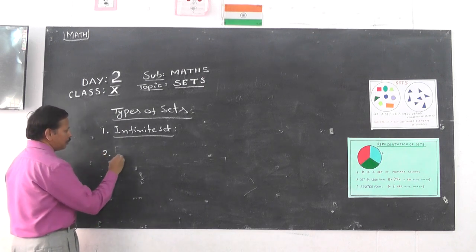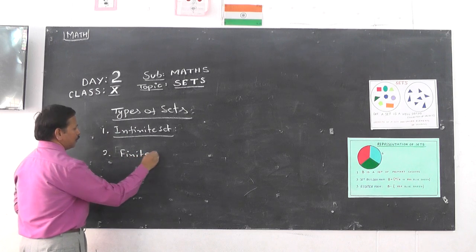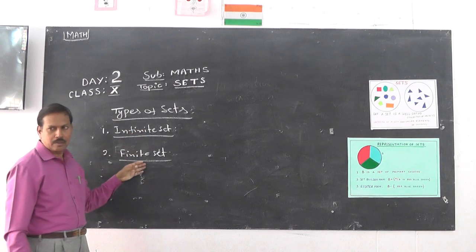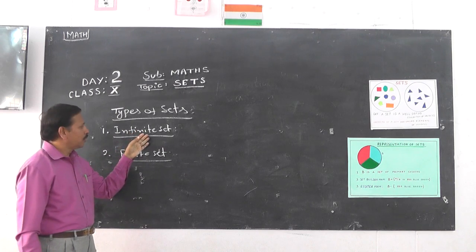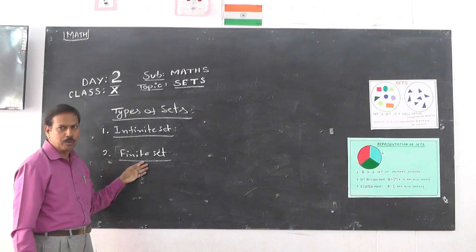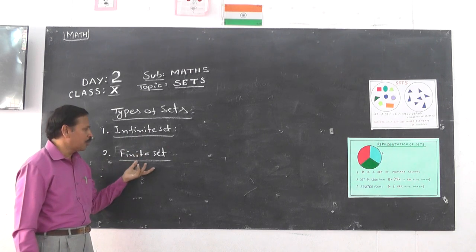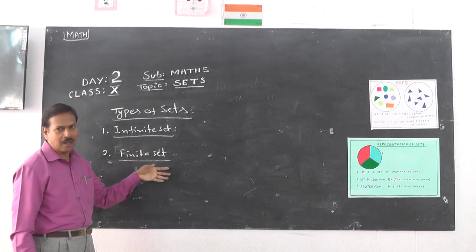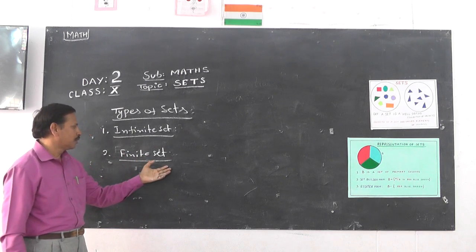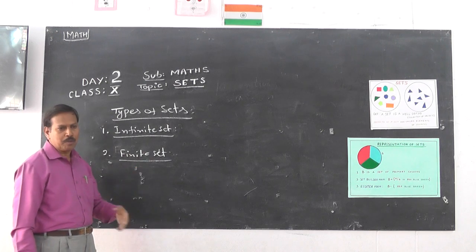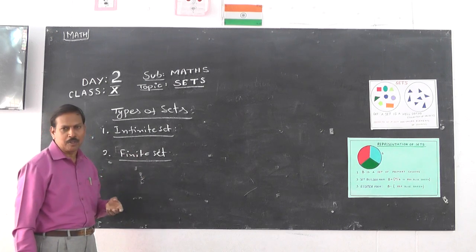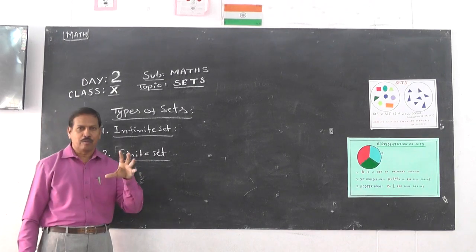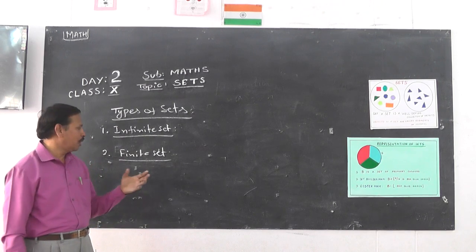Next is finite set. In an infinite set the elements are uncountable, but in a finite set the elements are countable. For example, the number of bones in the body is countable, so it is a finite set. The number of prime numbers less than 100 is countable, so it is a finite set. The number of students in St. Peter's school is also countable — that is a finite set.